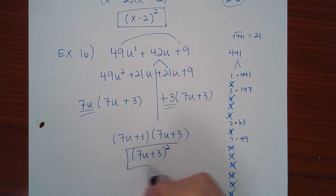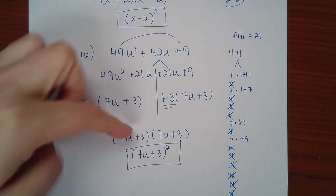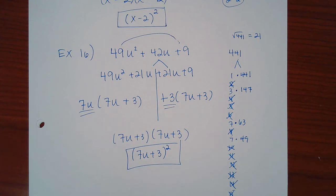The key takeaway with perfect square trinomials is that the two factors end up being identical, which you write as a square. Rather than memorizing special formulas, continue using the regular factoring process and you'll arrive at the same result. Next time we'll cover a couple more factoring topics and then begin solving equations that require factoring.